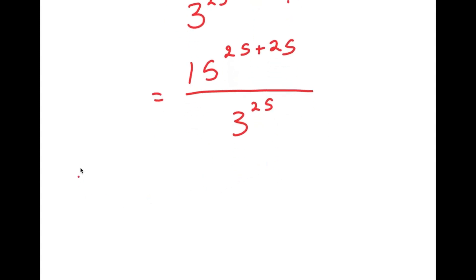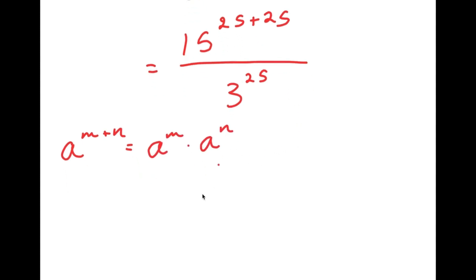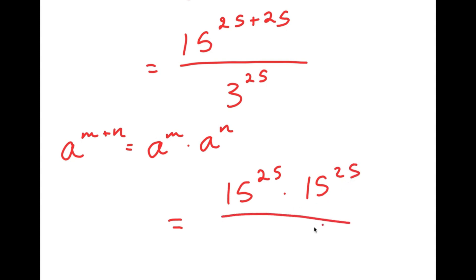The reason I did this is because now I can use the property: a to the power of m plus n is equal to a to the power of m times a to the power of n. So in this case, 15 to the power of 25 plus 25 is going to equal 15 to the power of 25 times 15 to the power of 25, and I have this over 3 to the power of 25.